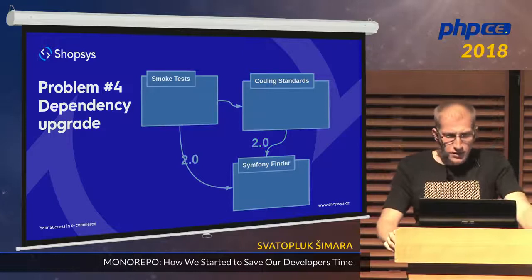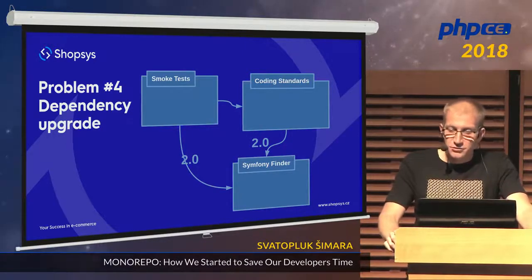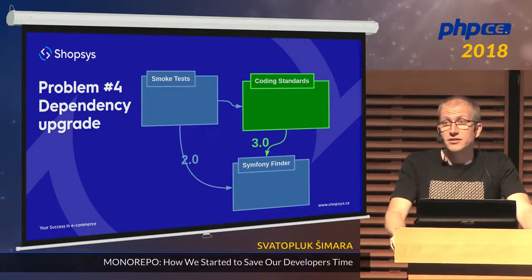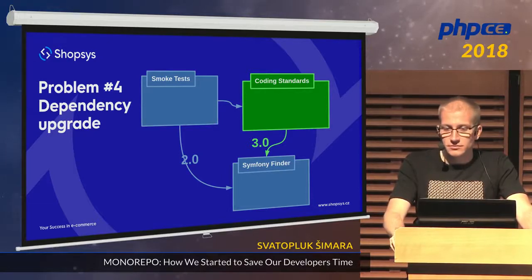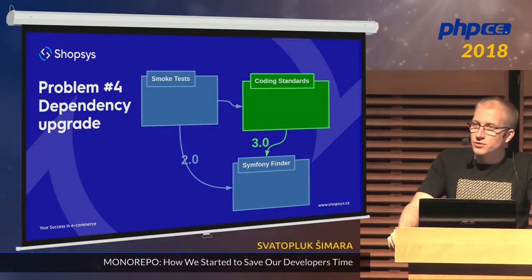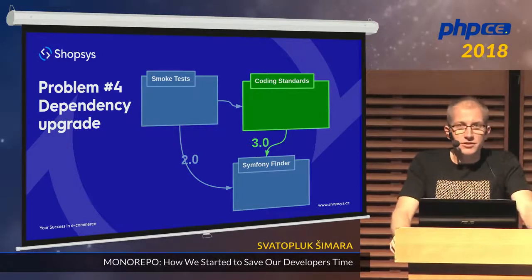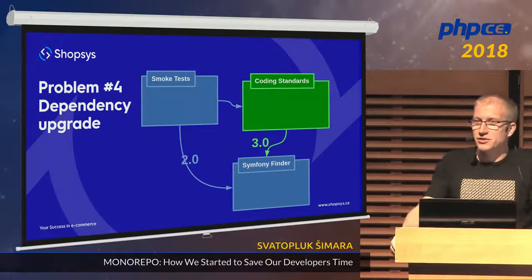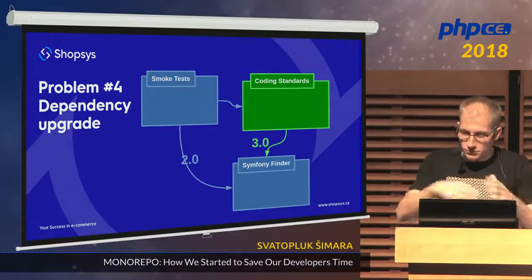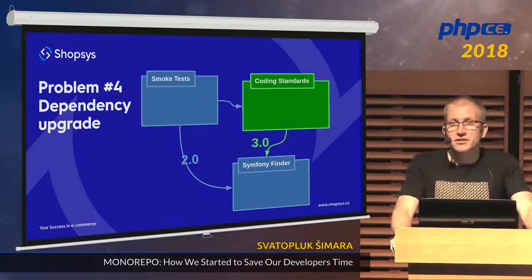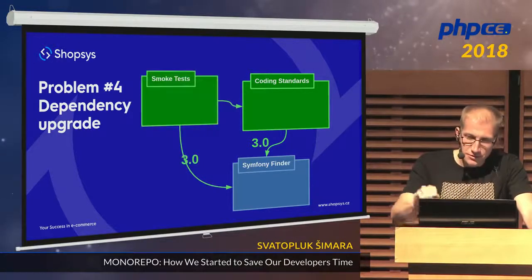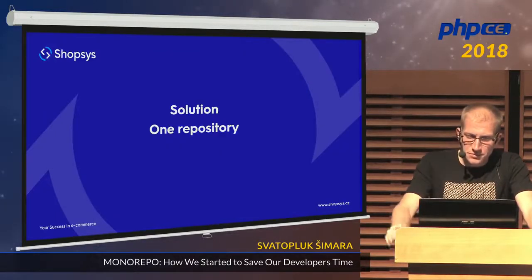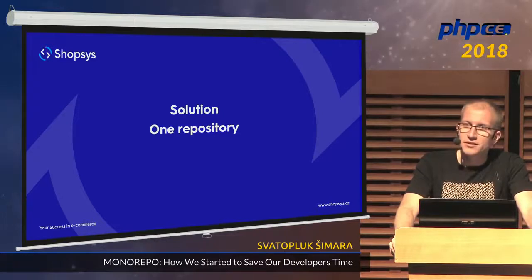To upgrade, you first have to update it in coding standards and release a new version. That goes through code review, tests, and business validation — where my product owner asks why it's only done in one package. Eventually, coding standards get released in a new version, and then you can update the rest of the dependencies. It takes time, and it's not the way we want to work.